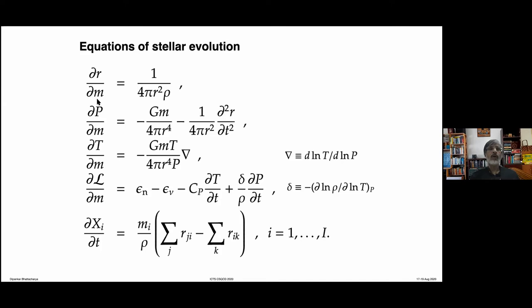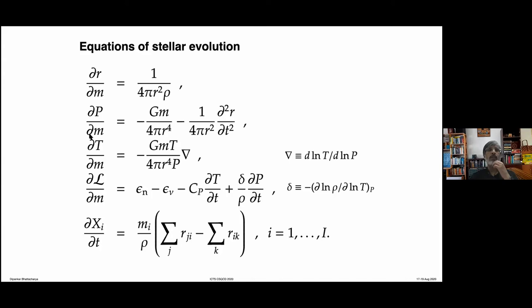The pressure gradient in Lagrangian coordinates can now be written as dP/dm = −Gm/(4π r⁴) minus 1/(4π r²) ∂²r/∂t². This tells you there could be a term describing the non-hydrostatic part of the evolution — if the star is not in mechanical equilibrium and its radius is changing with time, the pressure equation takes this form. If hydrostatic equilibrium is achieved, the second term goes to zero and you have only the standard result we derived from the Newtonian hydrostatic equilibrium equation.